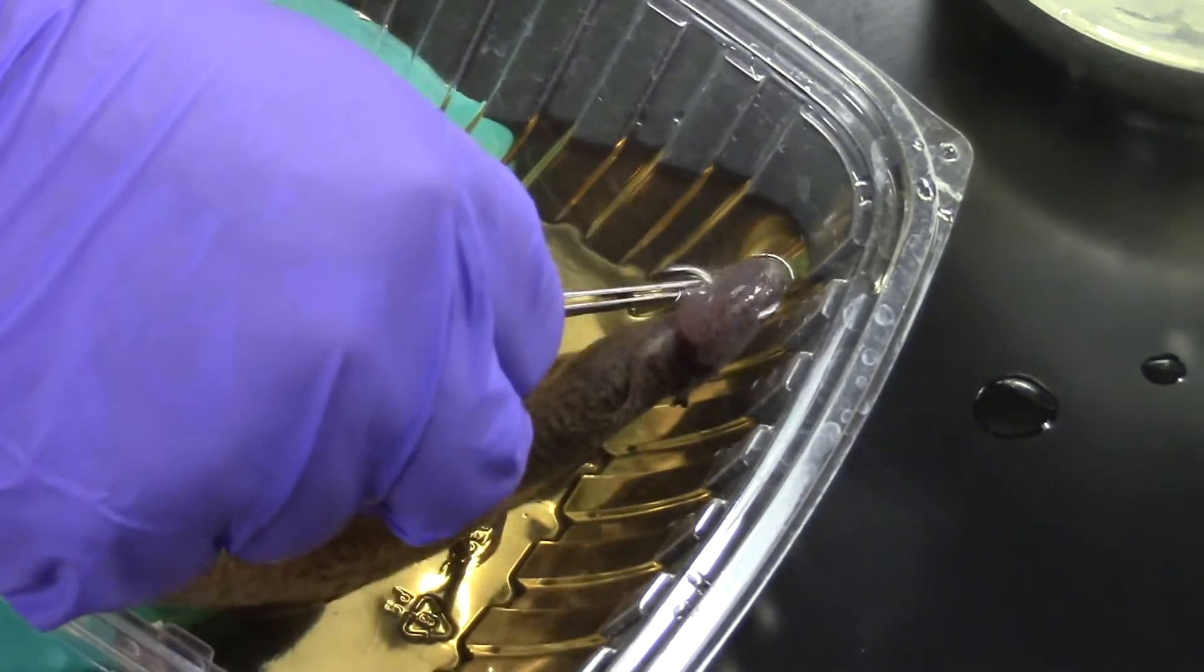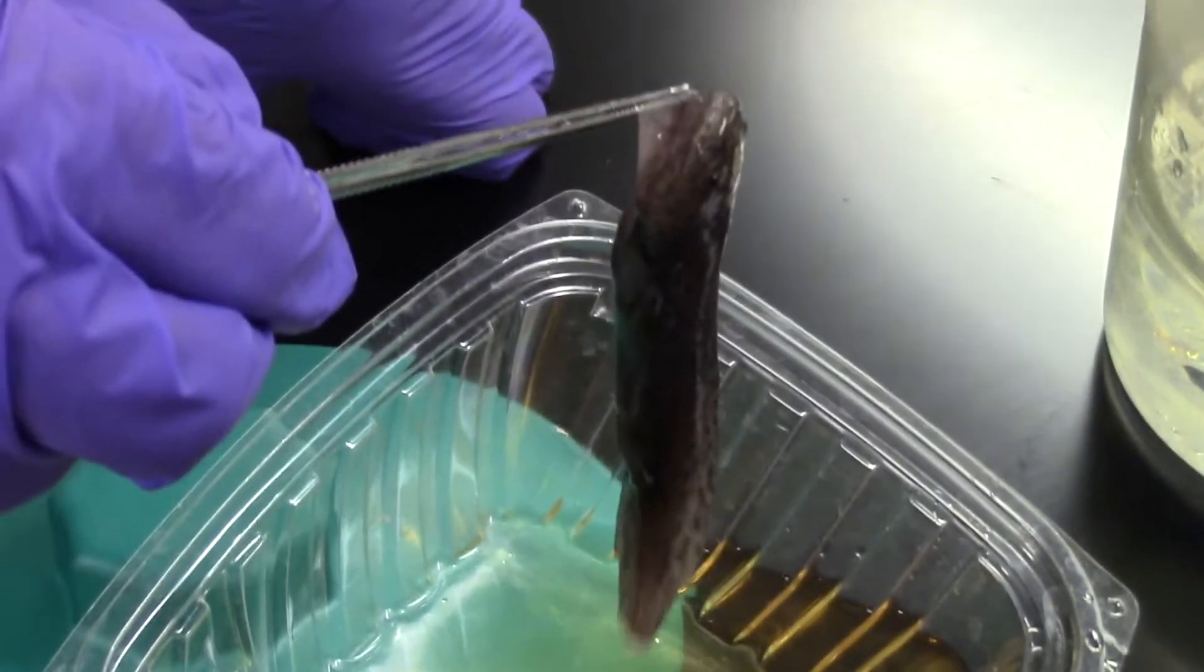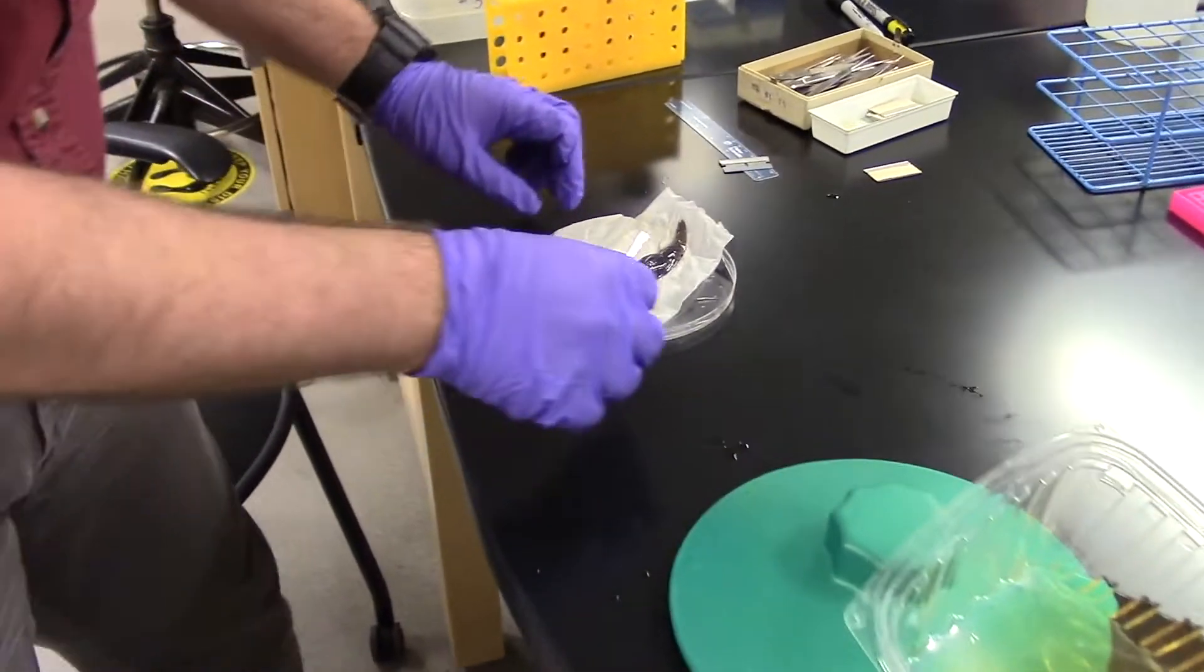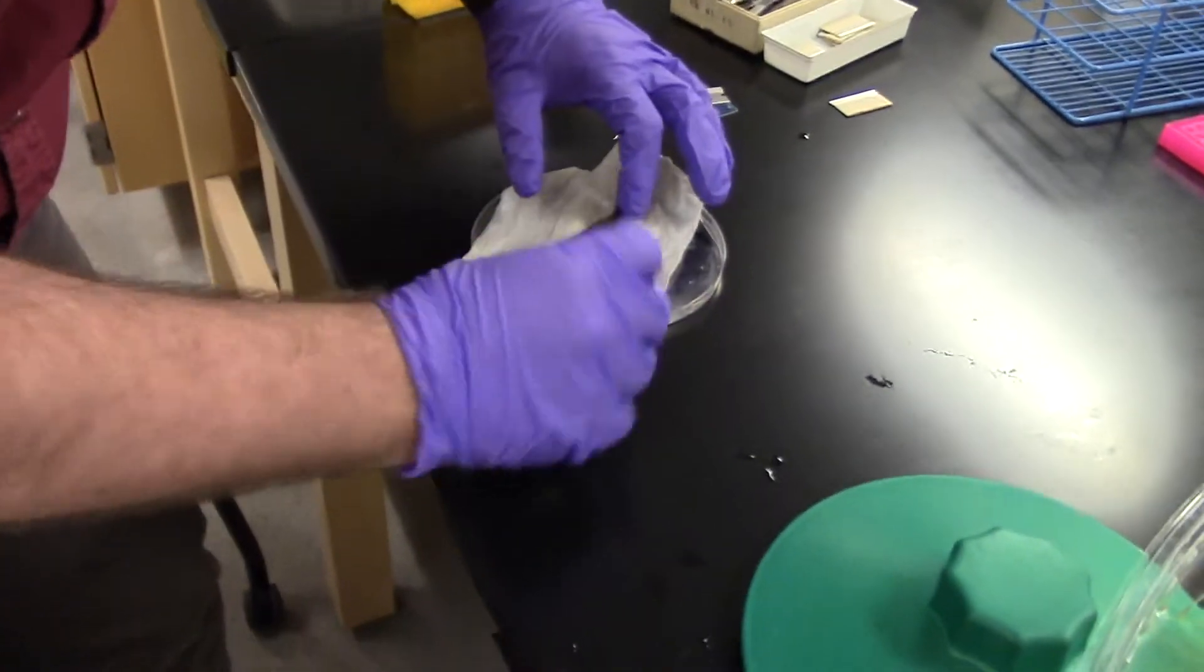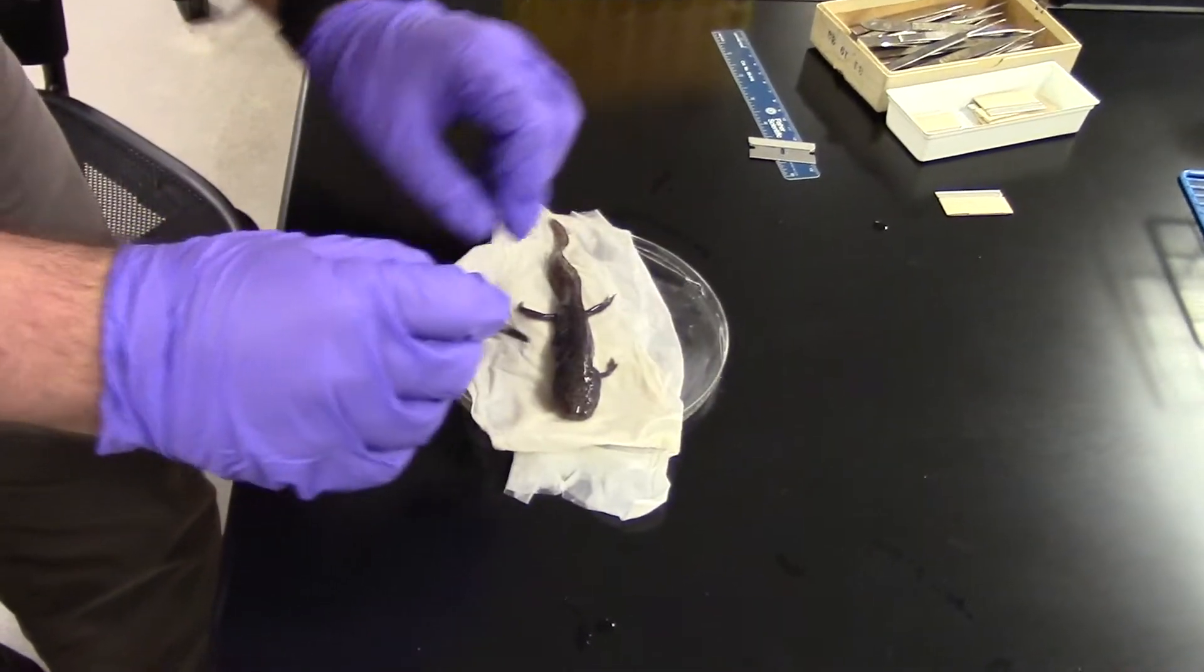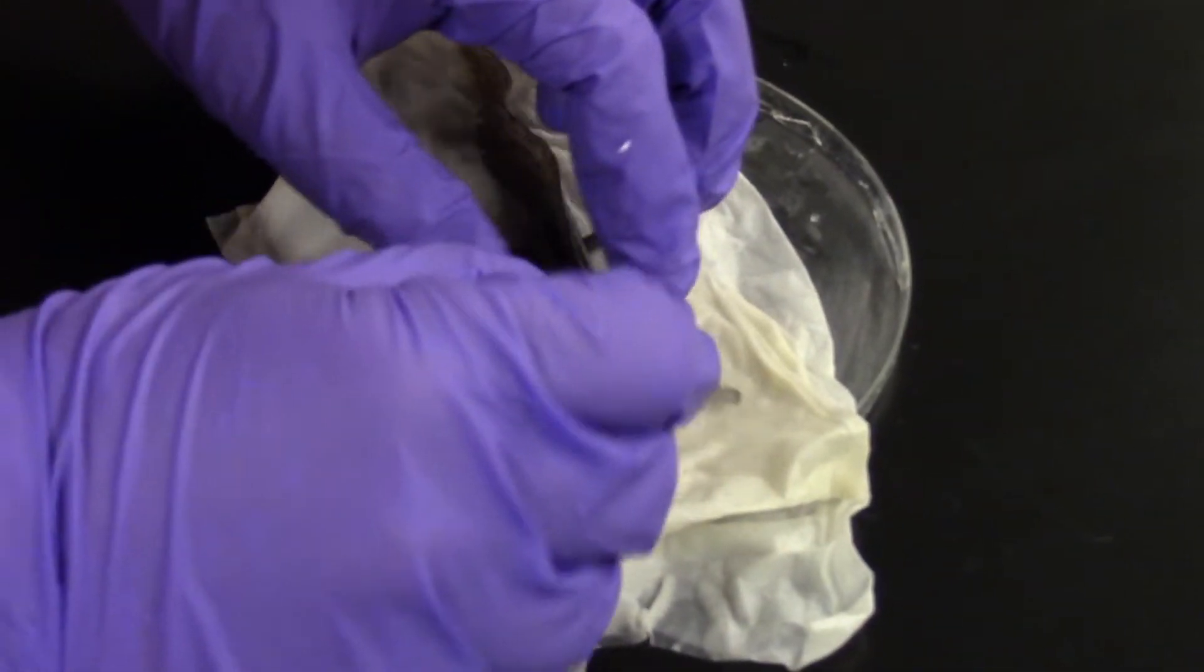I can pick up our axolotl by grabbing the flap of skin and I lay him on the dripping wet paper towel and I can isolate whichever portion I would like to amputate.